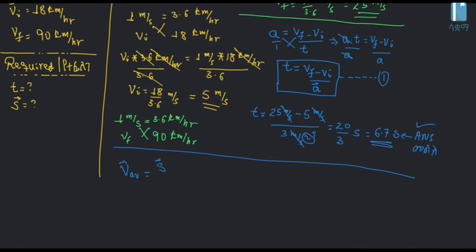The distance is calculated using average velocity over total time. Distance equals average velocity times time.